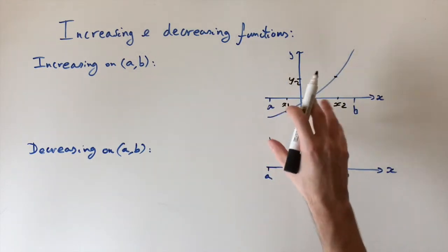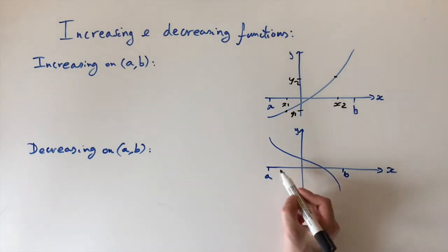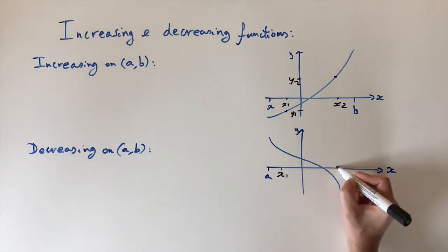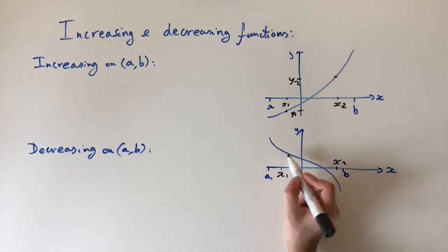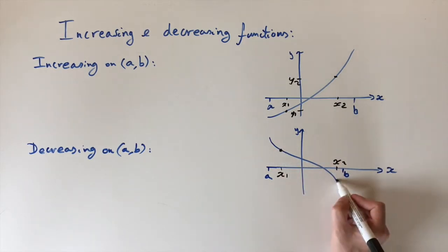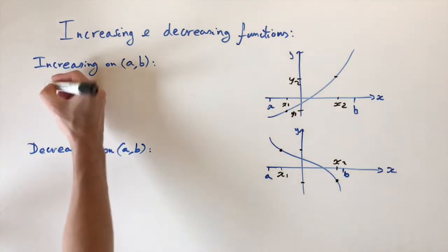So this is kind of how we think about it more rigorously. And then the same for decreasing function. If I take two points, x1 and x2, then the output, the second output is always lower. So this one and then this one. So let me just write that down mathematically.